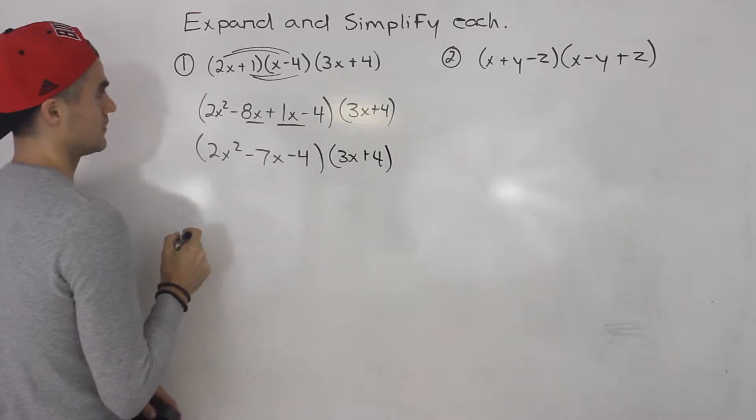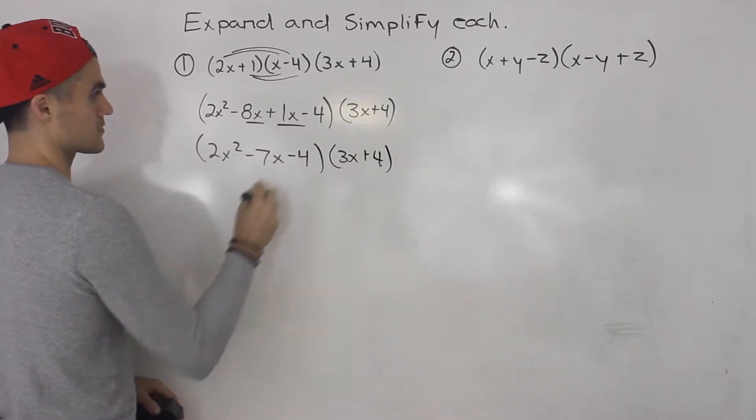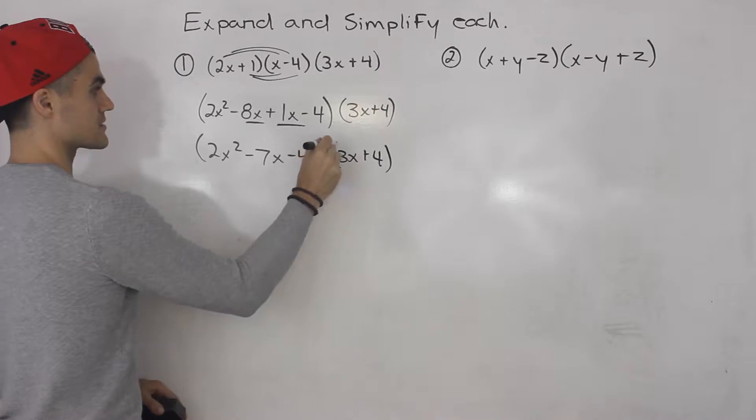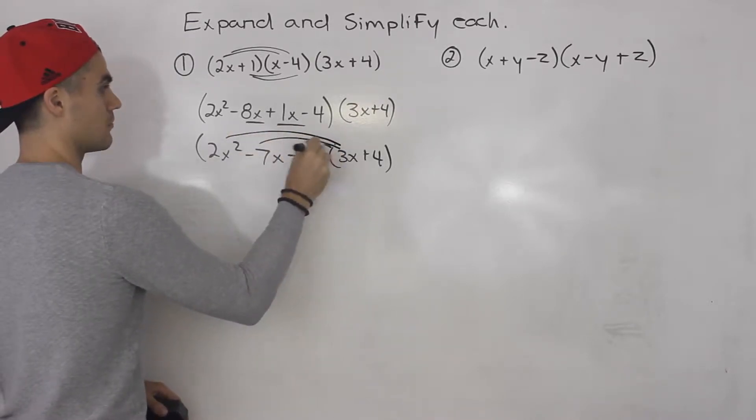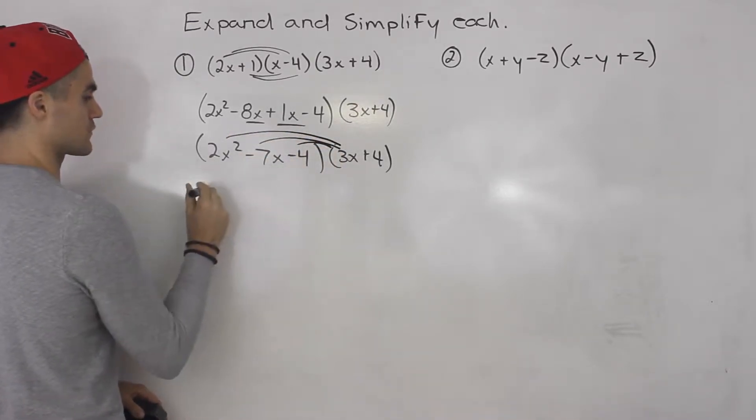And then what we can do is we could FOIL out these two brackets. So we would take the 3x, multiply it by all three terms in the first bracket.